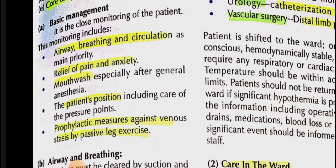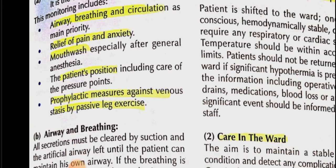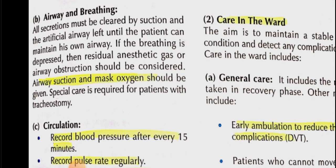The components of recovery room management include: airway, breathing, and circulation (ABC); fluid balance maintenance; and core temperature maintenance. As the patient arrives in the recovery phase, we prioritize airway, breathing, and circulation. We also relieve pain and anxiety, perform mouth wash after general anesthesia, and position the patient to avoid pressure points and prevent decubitus ulceration, using prophylactic measures like passive leg exercises to prevent venous stasis.